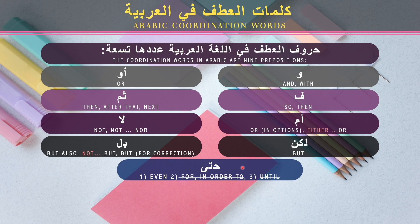The last one is حتى. It actually comes with different meanings and different usages. When it comes as a coordination preposition, it takes the meaning 'even'. But it can also come as a reasoning preposition meaning 'for' or 'in order to', and as an adverb for location or time meaning 'until'. In today's lesson, we focus on its use meaning 'even' as a coordination preposition.